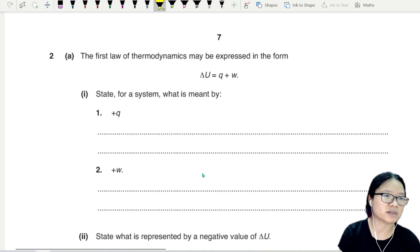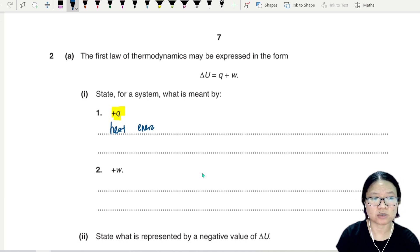For example, if they say positive q, it is heat energy transfer. q is heat, heat energy transfer positive into the system.